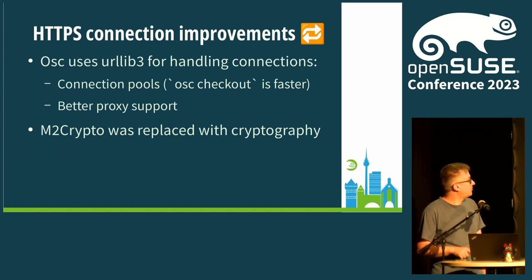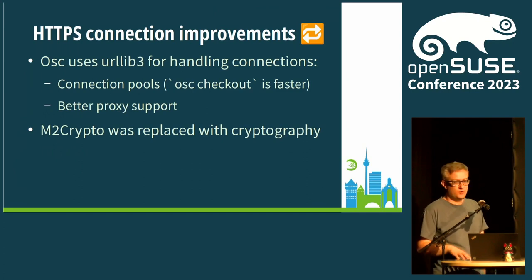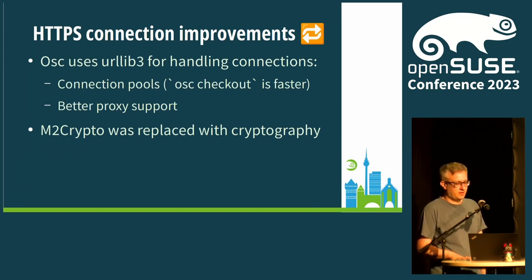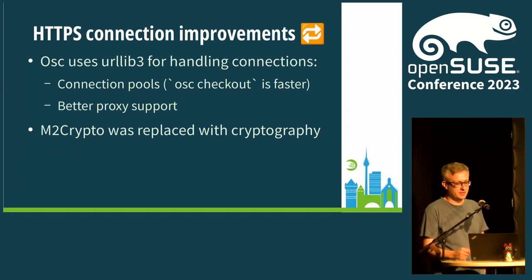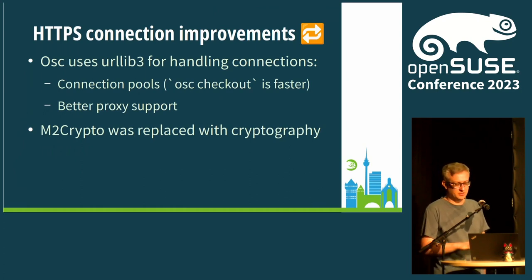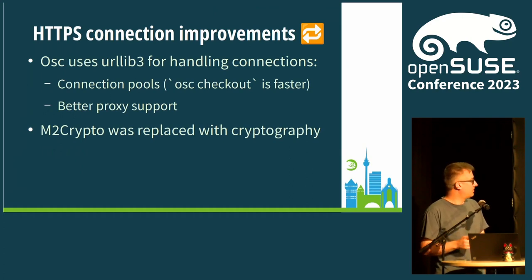There were also some improvements in how OSC handles connections. We replaced the old code with urllib3, which offers connection pooling — really nice. So when you run OSC checkout or any command that makes several consequent connections to the server, it is way faster than before. It also comes with better proxy support. Along the way we got rid of M2Crypto and replaced it with the cryptography library, which is a good idea because M2Crypto wasn't working for a while — in Fedora it was stuck not being able to compile against OpenSSL version 3. Cryptography doesn't suffer from these issues.